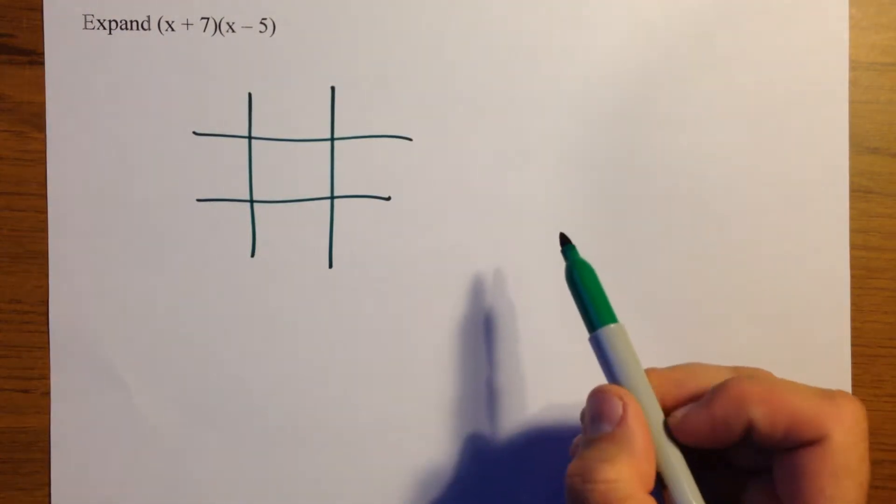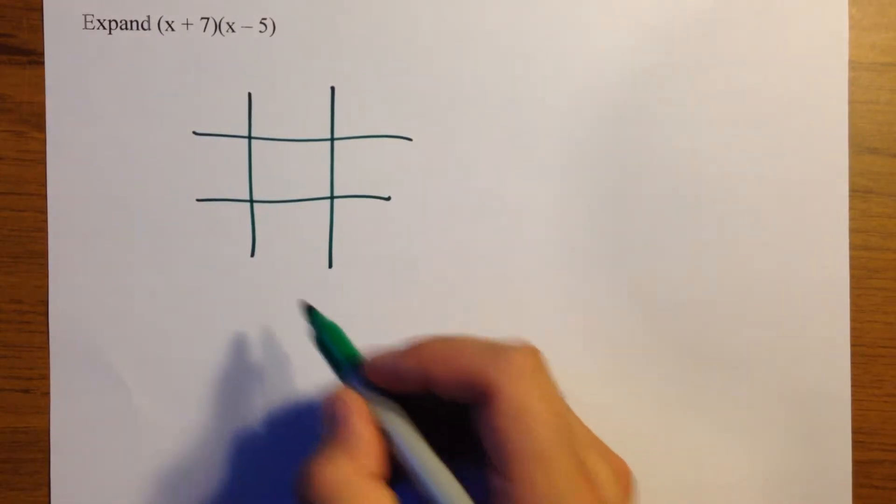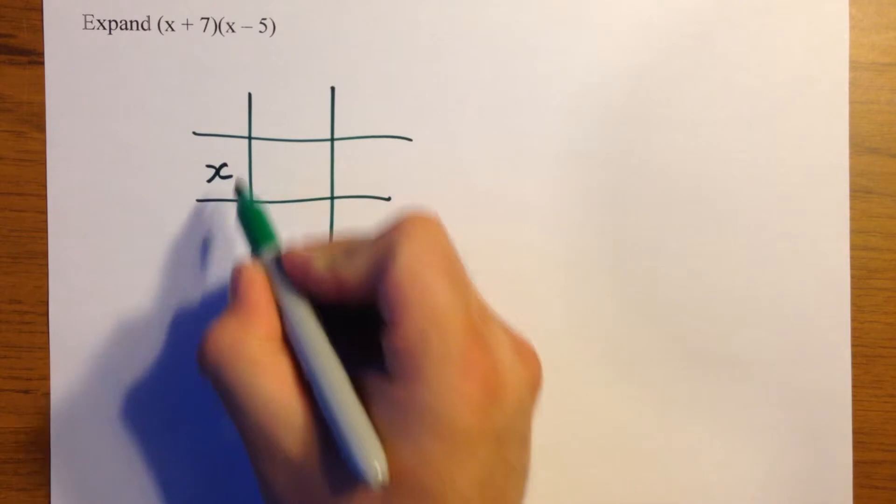And the only reason this type of double bracket is any more difficult than the previous is because we've got a negative number this time. So first bracket down the side,